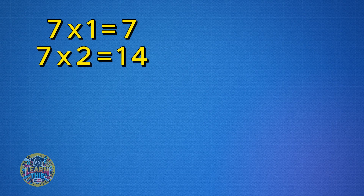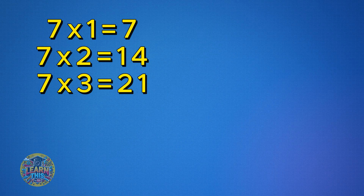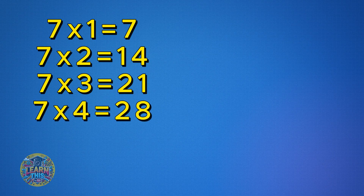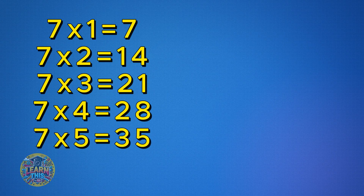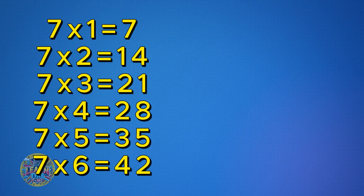Seven times three is 21. Seven times four is 28. Seven times five is 35. Seven times six is 42.